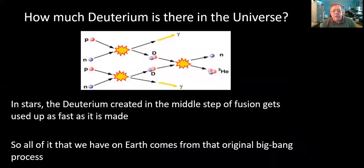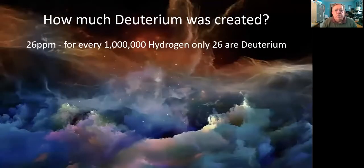When we look out there in the universe now, we find that any deuterium in the middle of stars is destroyed and used up as fast as it's made. And so we can't really tell from stars. But if we look out at the rest of the universe, we find that 26 parts per million. In other words, 26 deuteriums for every million hydrogens is pretty much the average composition out there of the rest of the universe.